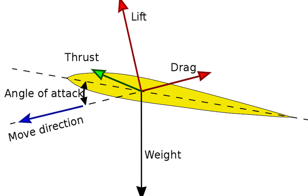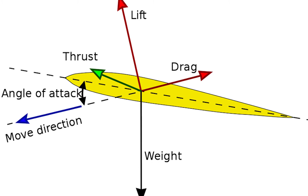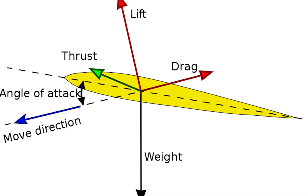Lift is the vector component of the force exerted by a fluid onto the surface of the object around which the fluid flows. In simple words, lift is a force which opposes the weight of the aircraft and maintains it in air. This force is perpendicular to the direction of the flow and depends on the shape of the wing as well as the angle of attack.